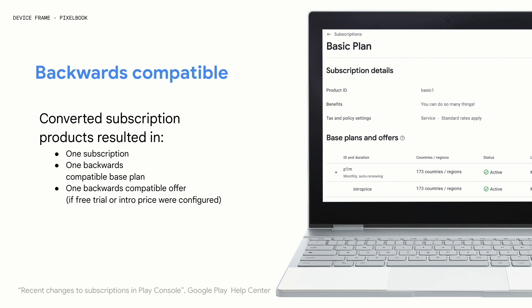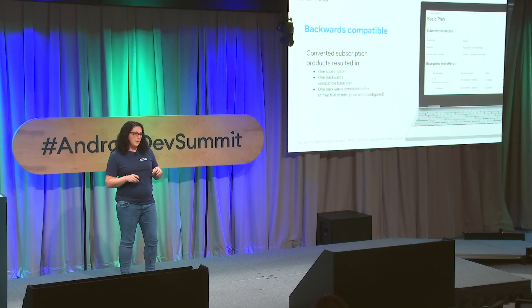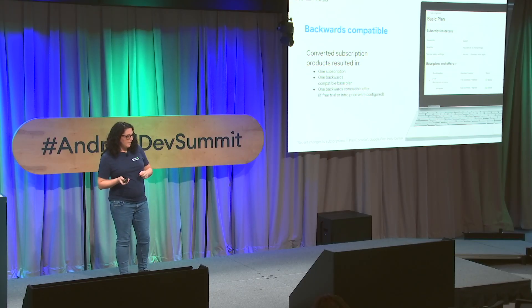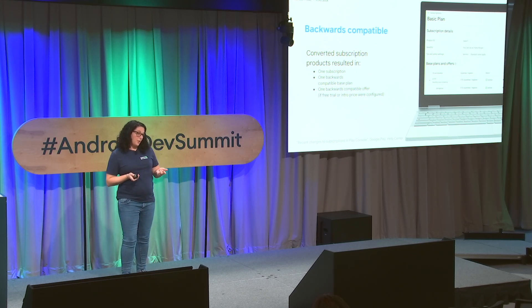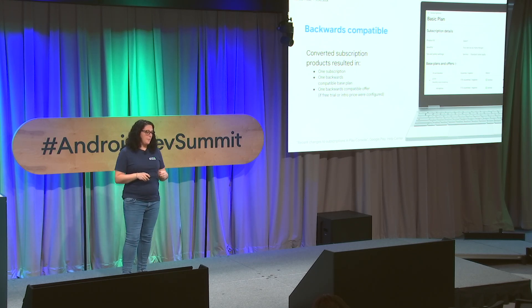You can make them editable again from the Play Console, but if you make any changes, ensure you're not affecting your live app versions in any way that can break them. It might be simpler to create new subscriptions for the new versions of your app built with Play Billing Library 5. To read more about how to configure your subscriptions catalog for this new system, you can read the documentation referenced in the talk.